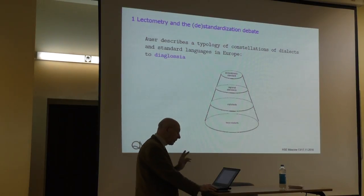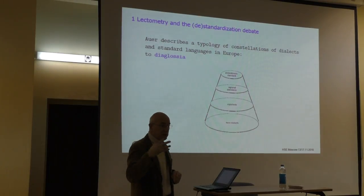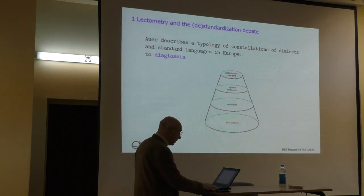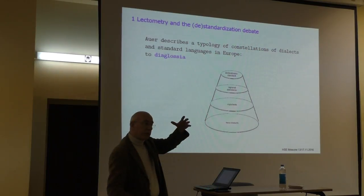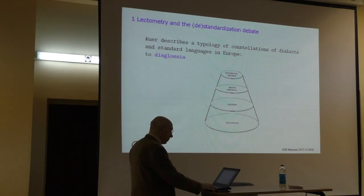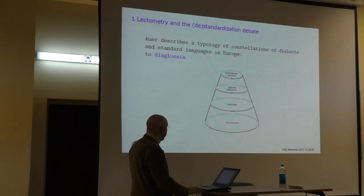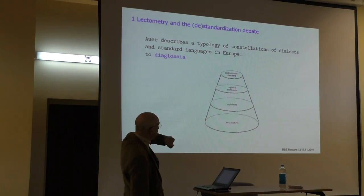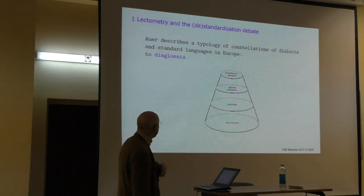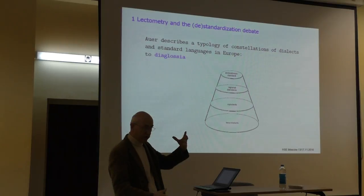Then, the next thing that happens — and it's only happening at this point in a number of languages — is that the whole pyramid, or the spectrum of variation, becomes narrower. Terminologically, this is what you might call diaglossia, not diglossia, but diaglossia because you have a spectrum.